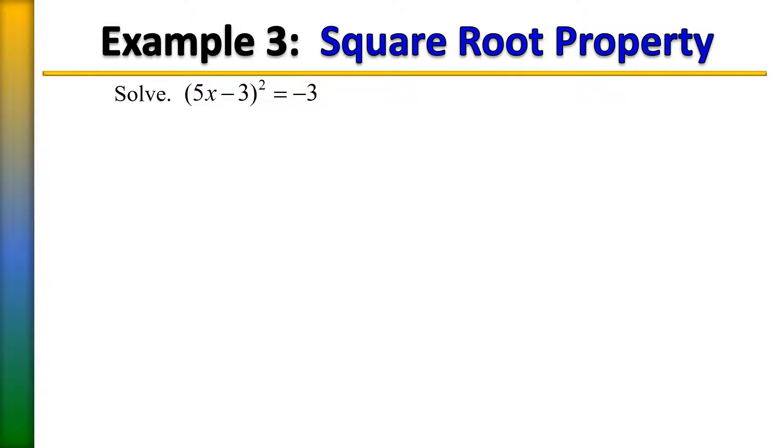Whenever we have it in that form, we can apply the square root property which states that you will take the square root of both sides. Because remember, with equations, what you do to one side you have to also do to the other.